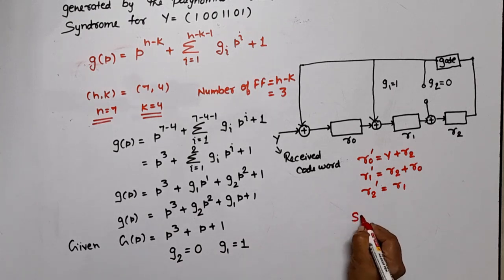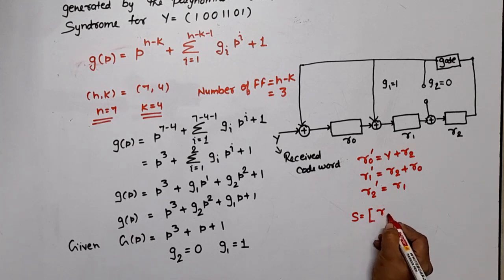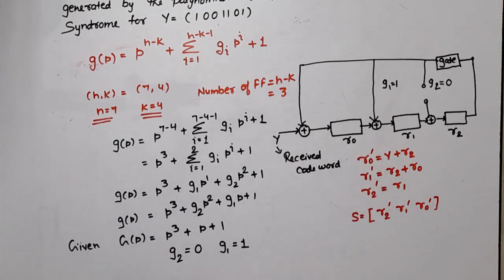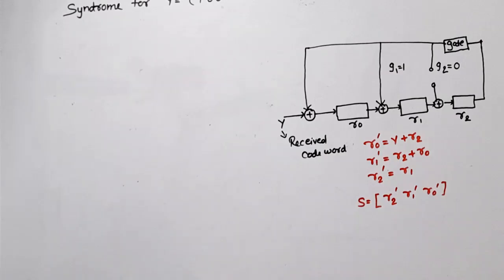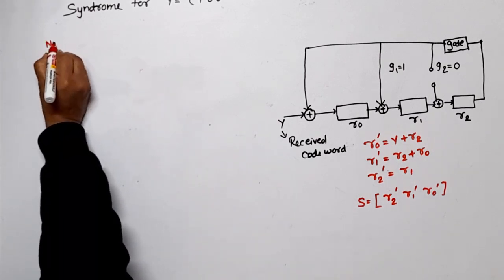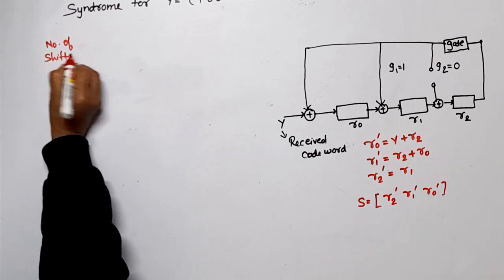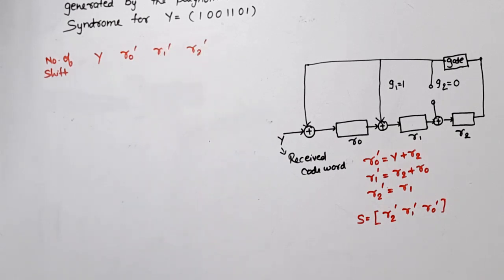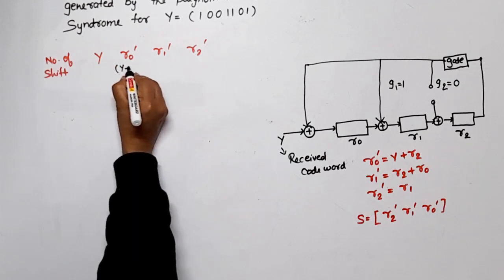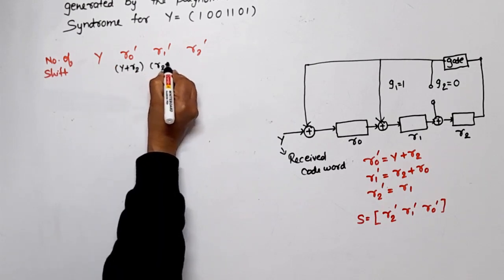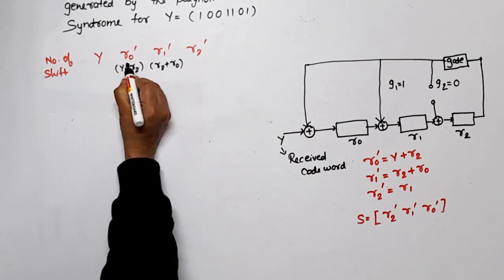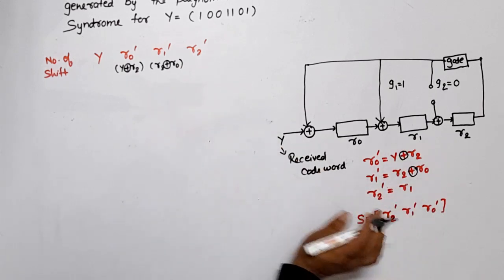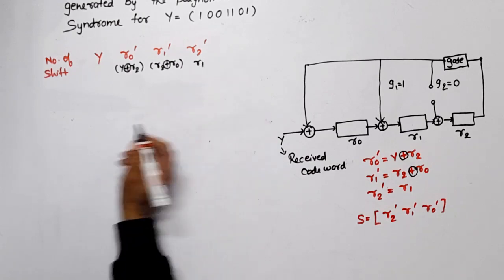So, these are the equations for calculating the syndrome. Our syndrome, S = R₂', R₁', R₀'. You can also write this. And you can write R₂, R₁, R₀ as well, you can define it. It's up to you. Now, we calculate it. We calculate the number of shifts. What will happen here? This is R₀', R₁', R₂'. Now, our formulae, which I have used here, so that easily remember, Y + R₂ means previous R₂. This will be R₂ + R₀.